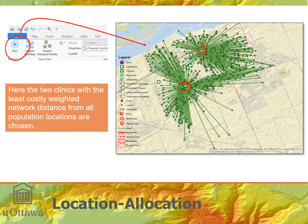There are some marginal cases where the time difference between going to one clinic versus another is negligible, but the algorithm must find a solution for each demand point. It finds solutions according to the specifications of the problem. What matters is that the population would best be served by these two locations versus any other two locations in the candidate set. That completes the location allocation analysis.